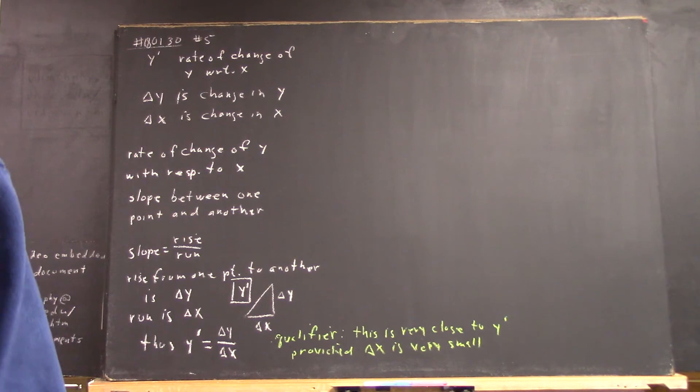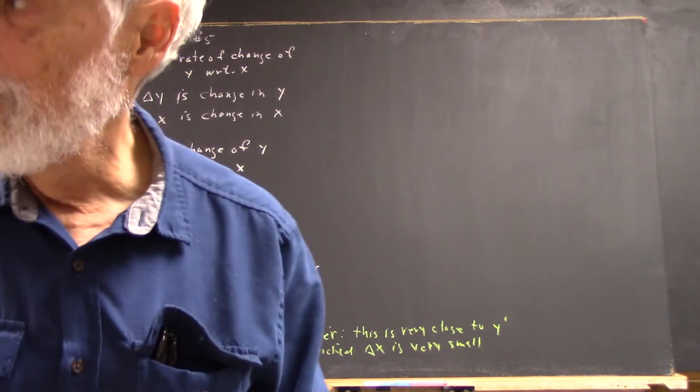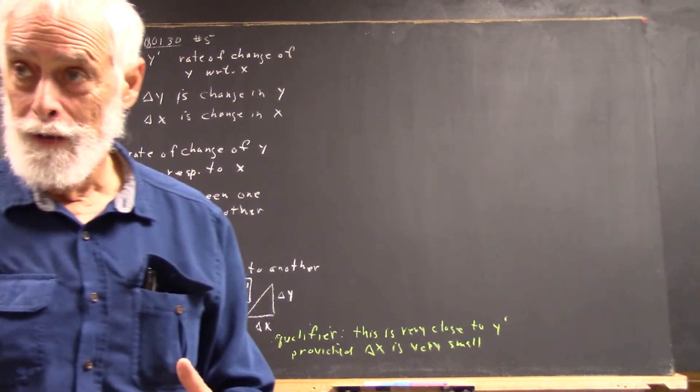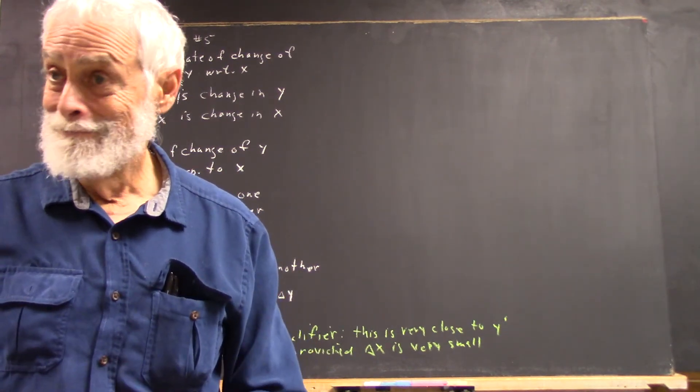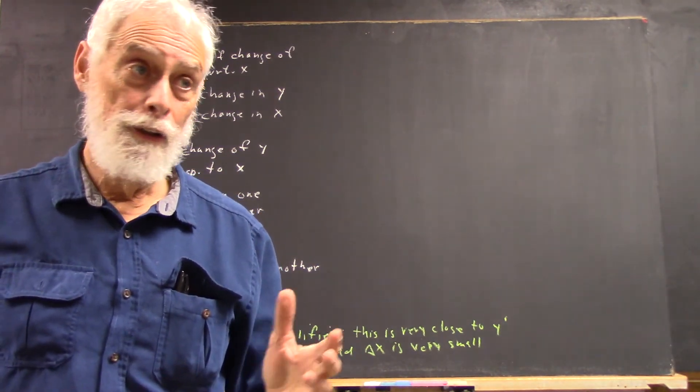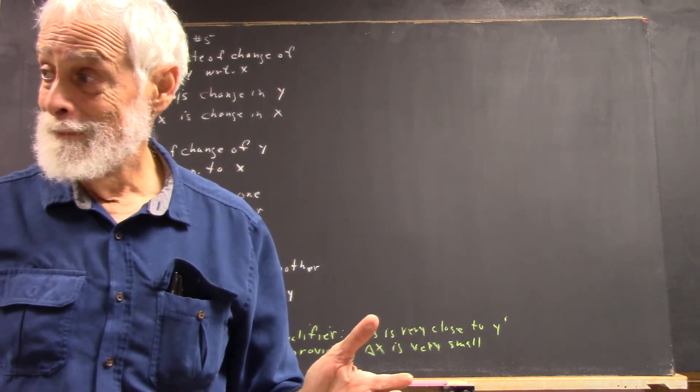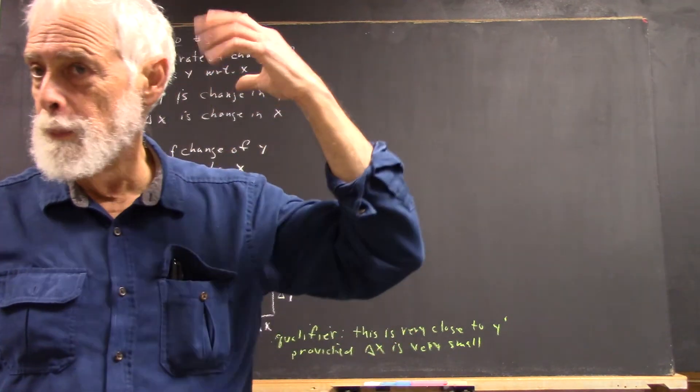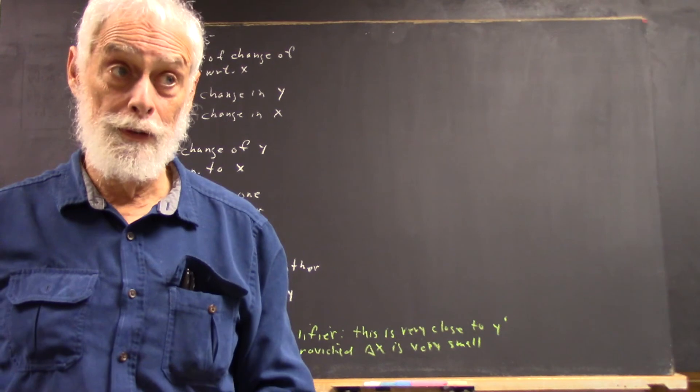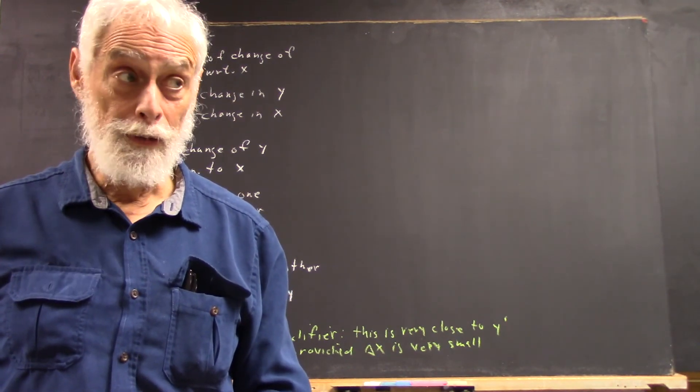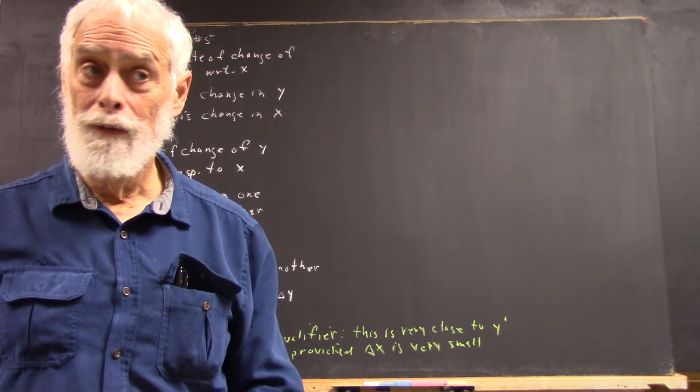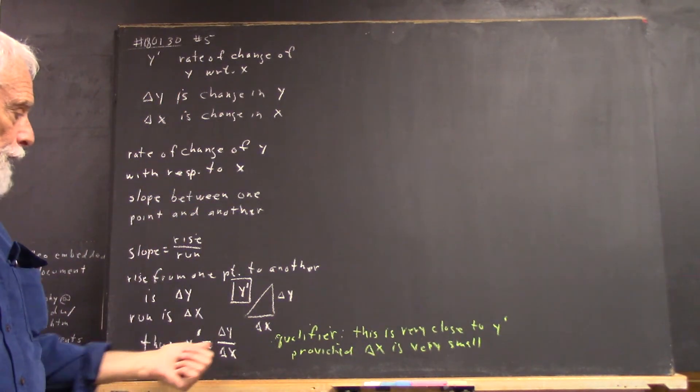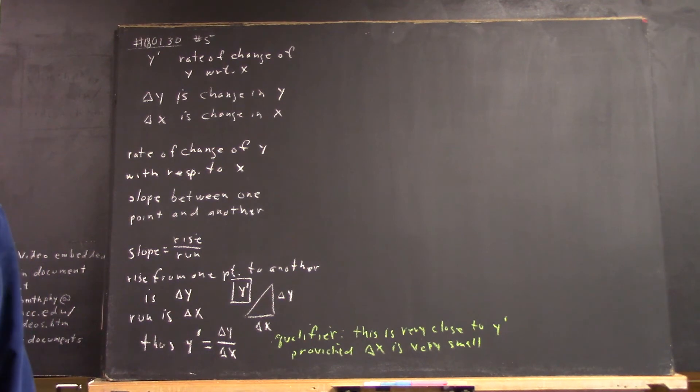Actually, y prime is defined as the limiting value of delta y over delta x as delta x approaches zero. You don't need to remember that right now. I mean, you know, start away somewhere in the back of your mind because we'll come back to it in the not too distant future. But this is precalculus and that's exactly where the transition from precalculus to calculus occurs.